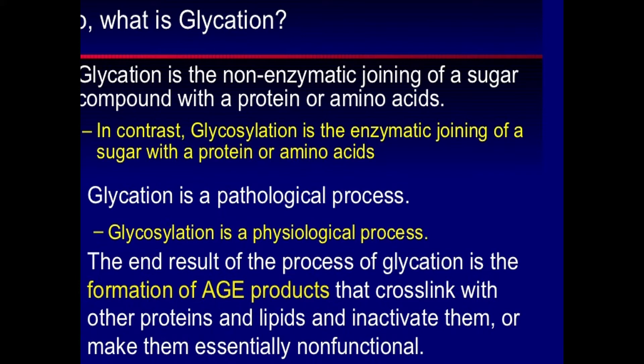One of those ways is the formation of advanced glycation end products. We saw in the previous lecture that due to different processes, nitric oxide production is reduced because of reactive oxygen species production, ultimately leading to vasoconstriction and different processes starting from there.